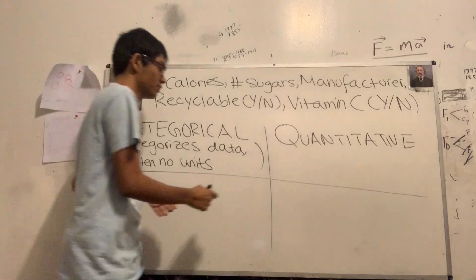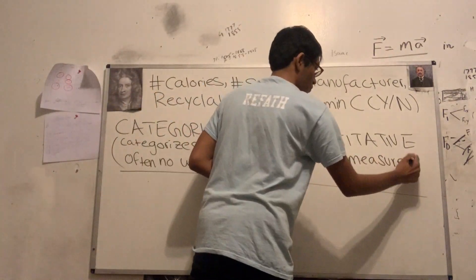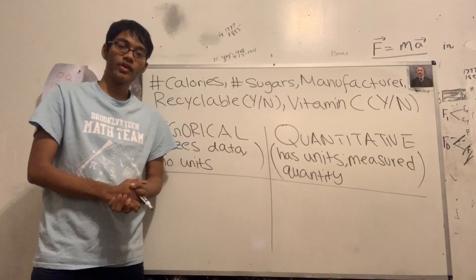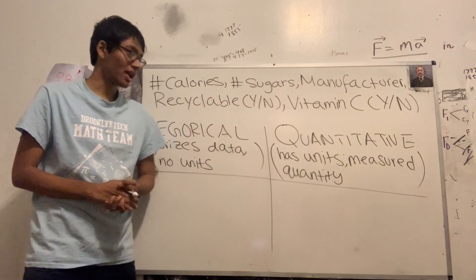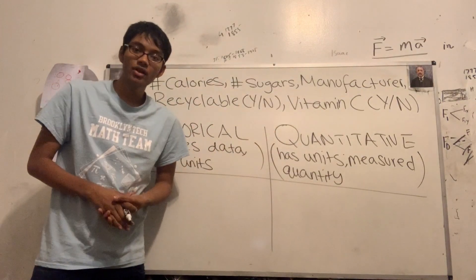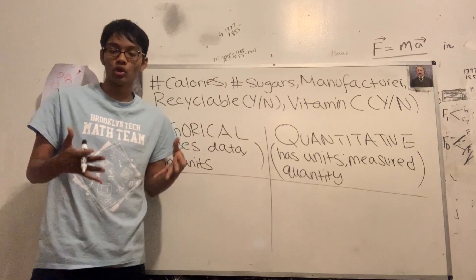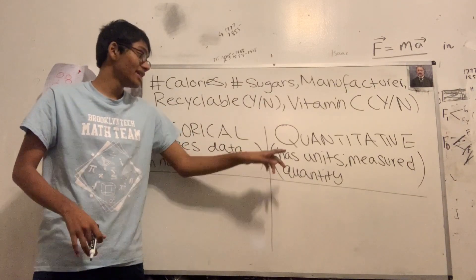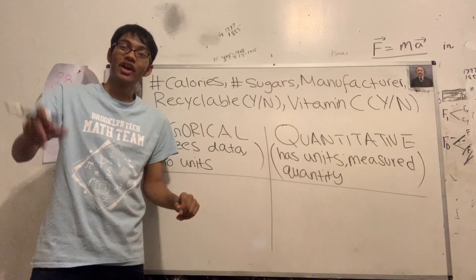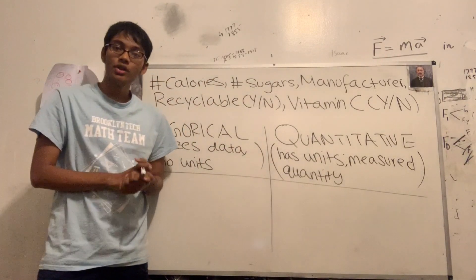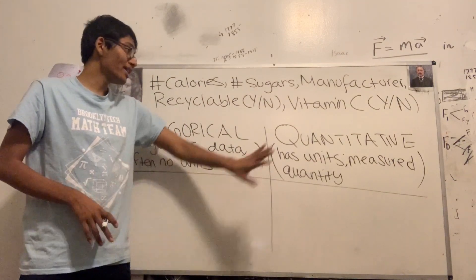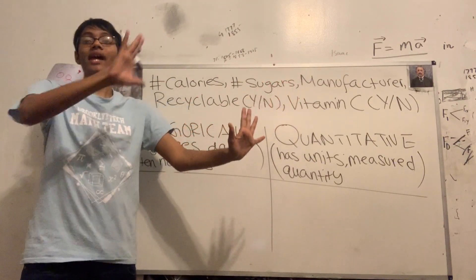A quantitative variable is a variable that usually has units — go ahead and watch our video on SI units if you don't know what I mean. It also has a measured quantity. For example, a quantitative variable could be the number of laptops a household owns — that's quantitative because it has units, it can be measured, and you can analyze patterns and trends. With categorical variables you can only count the number of cases in each category, whereas with quantitative variables you can actually find trends and analyze patterns.